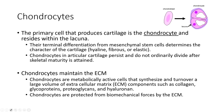Chondrocytes don't typically divide once they're mature — once your skeleton is mature. Their key role is maintaining the ECM, and depending on their terminal differentiation, it affects the type of cartilage that chondrocyte produces — hyaline, fibrous, or elastic. Chondrocytes are active; they synthesize and turn over large volumes of ECM: collagen, glycoproteins, proteoglycans, and hyaluronin — that's hyaluronic acid — which helps keep the joint frictionless.